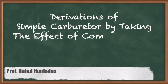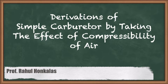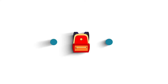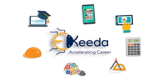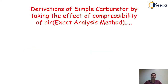Dear friends, in this video we are going to discuss another very important derivation of a simple carburetor by considering the effect of compressibility of air. In the last video, we already discussed the derivation of a simple carburetor by neglecting the effect of compressibility of air — that derivation is also called the approximate analysis method. This derivation is called the exact analysis method of a carburetor.